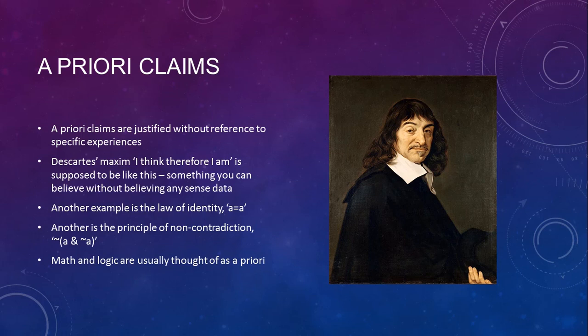The other way of justifying a claim is a priori. A priori claims are justified without reference to specific experiences. For example, Descartes' 'I think therefore I am' — he didn't trust his senses and wanted a firm foundation for all knowledge. He asked: what happens if I doubt everything, all my sensory experience? And he thought 'I think therefore I am' gives a first principle for reason — a firm place to stand that didn't require any sense data to justify it.